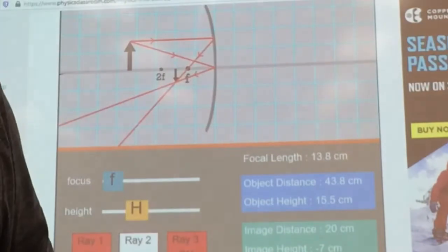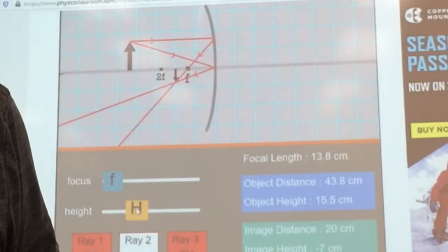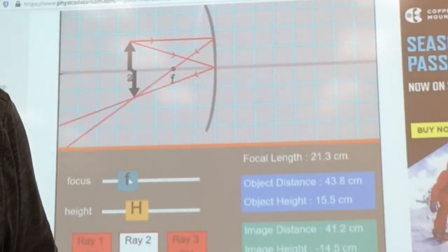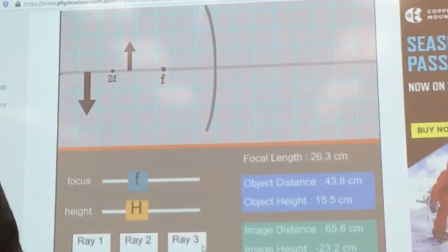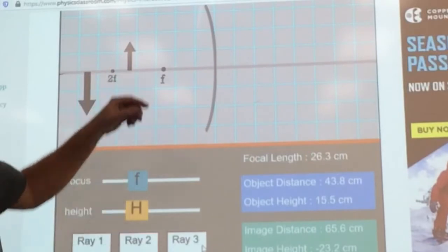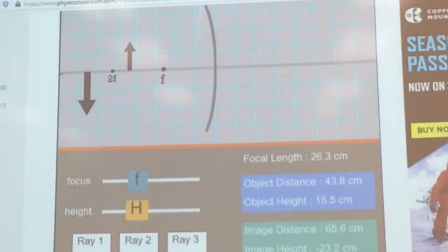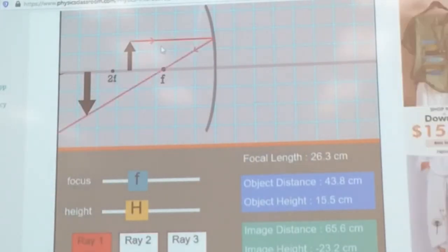Now we can move. I like this because we can actually move the focal point around, and you notice as we come out here, it changes. Let's see why. Again, the first ray is to the mirror and through the focal. Let's represent that. There it is, to the mirror, through the focal.